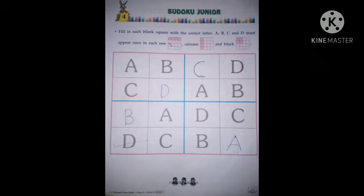Come to the next row. A, D, C. So children, here is a missing letter, B.